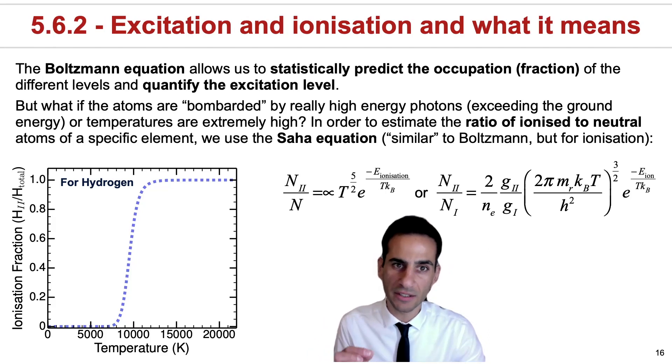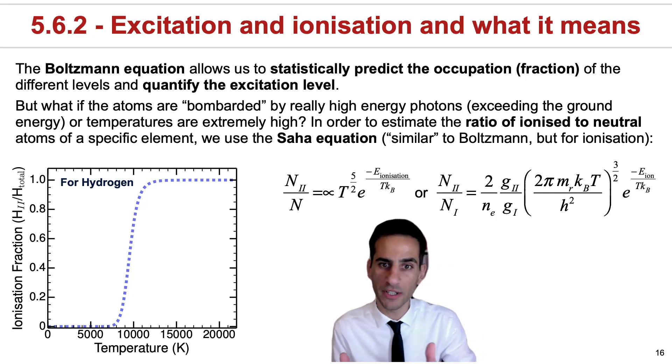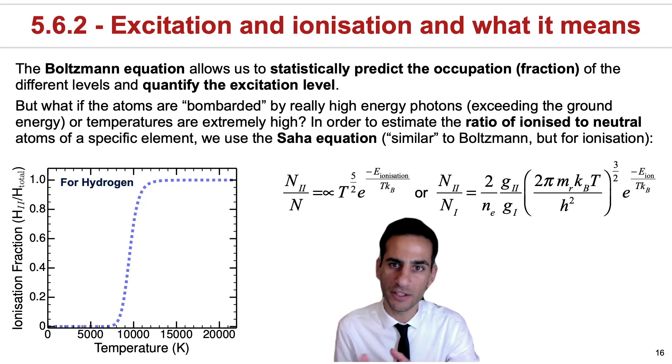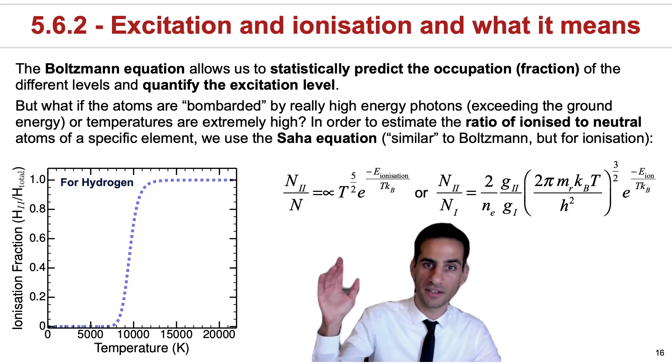Now, say that actually, apart from being excited, your atoms are being bombarded or absorbing such high-energy photons that they're receiving more than the binding energy. If this happens, what you're actually doing is not just exciting the atoms, but ionizing them. The important question is, how do you quantify the ratio of ionized to neutral atoms of a specific element?